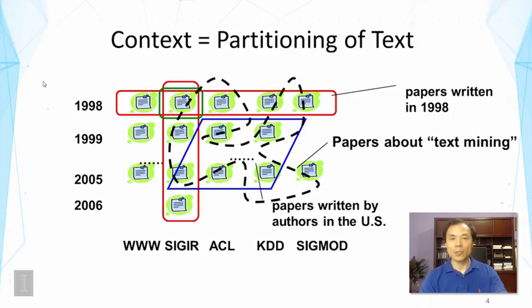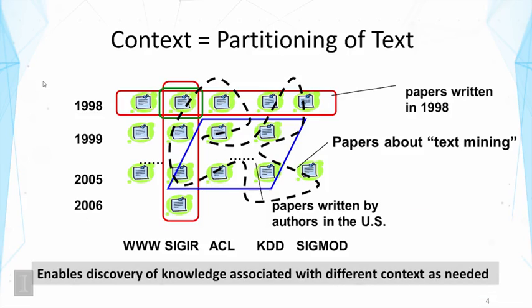Or we can obtain a set of papers about text mining and compare them with papers about another topic. These partitionings can also be intersected with each other to generate even more complicated partitions. In general, this enables discovery of knowledge associated with different contexts as needed. In particular, we can compare different contexts — for example, comparing topics over time reveals trends, and comparing topics in different contexts reveals differences about the two contexts.